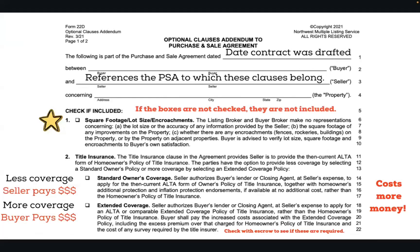When we're doing the 22D, we want to make sure the date up top matches the rest of the purchase and sale, which is typically the date the contract was drafted. We also want to make sure we're referencing the correct purchase and sale agreement it belongs to. With this form, if the boxes are not checked, that means they are not included.